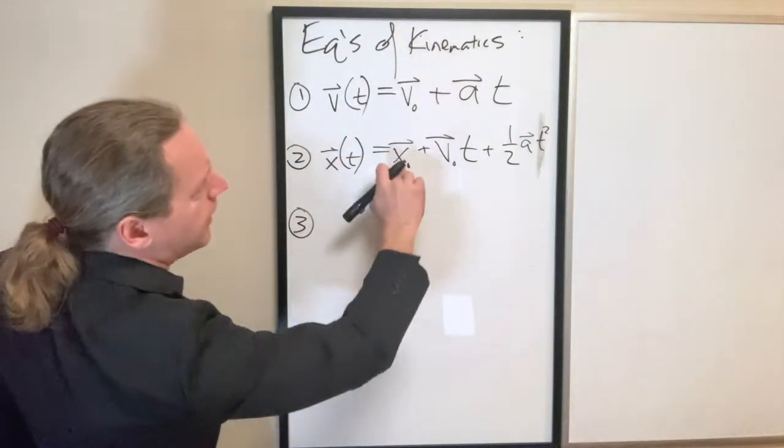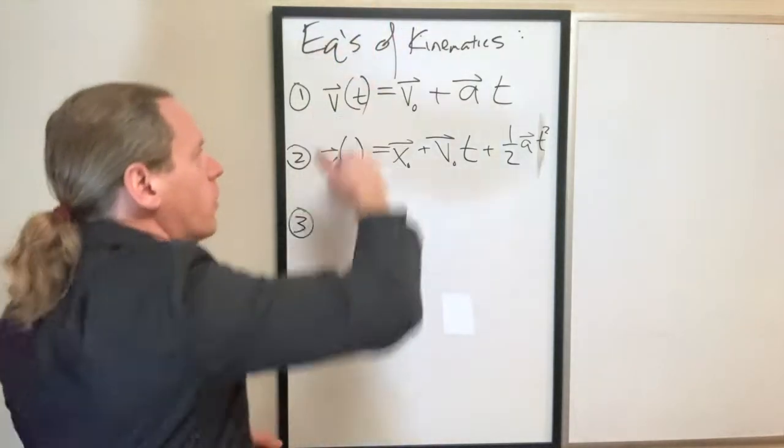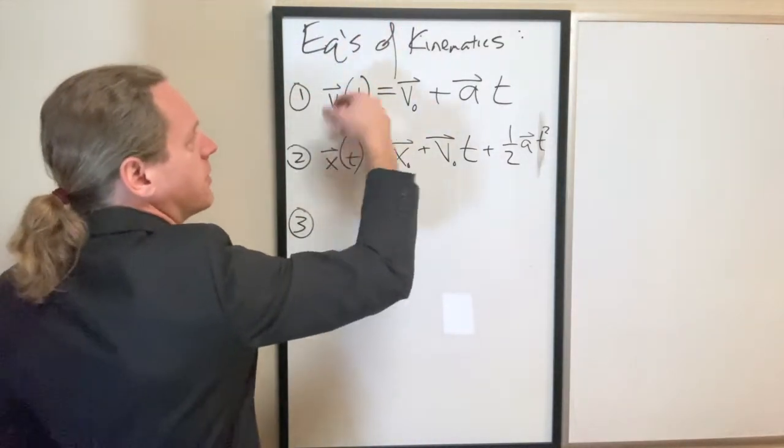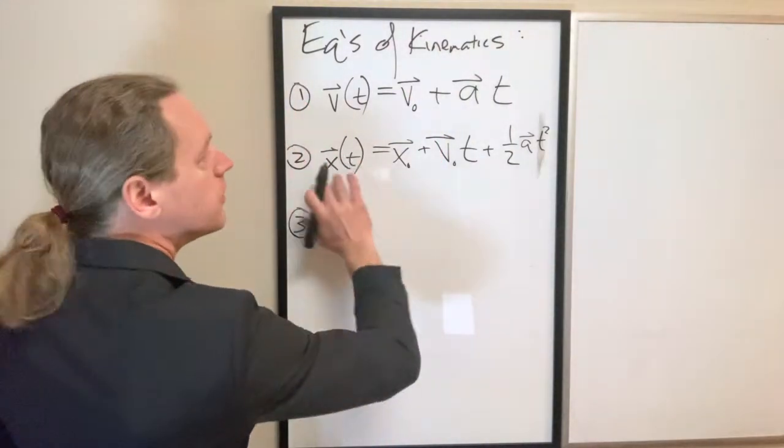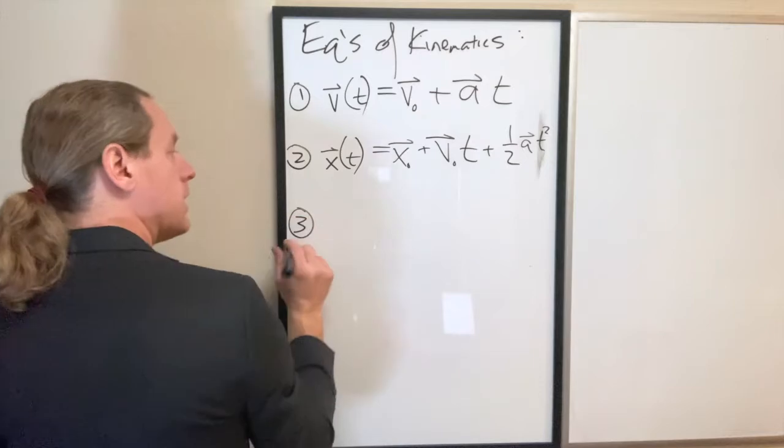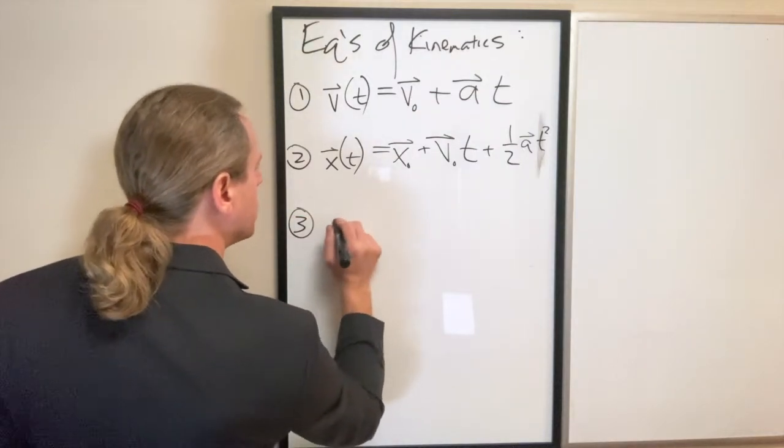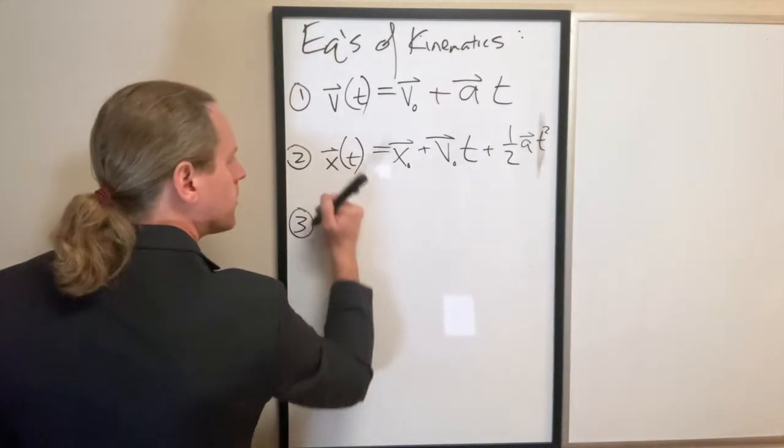And this equation, again, comes from just integrating this with respect to time and that's what you get. And by the way, the x naught and the v naught there are actually your constants of integration once you run the velocity through that integral. I hope that makes sense.